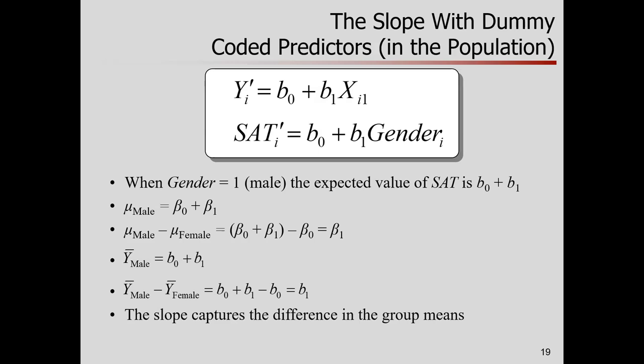How about the expected values for males? Let's see, when gender equals one, that's the males in this data set, the expected value is, let's plug in a one for the predictor. Intercept plus slope times one. The slope times one is just the slope. So the expected value for males is literally just the intercept plus the slope. In the population, the population mean for males would be the population intercept plus the population slope. So what's the group mean difference in the population? The mean for males, well, that's that intercept plus slope minus the mean for females. You said that's just the intercept. Hey, that gives us the slope.